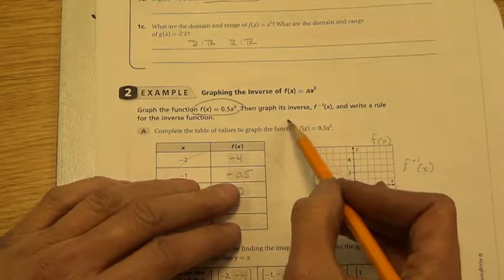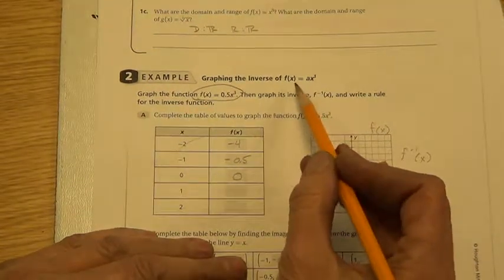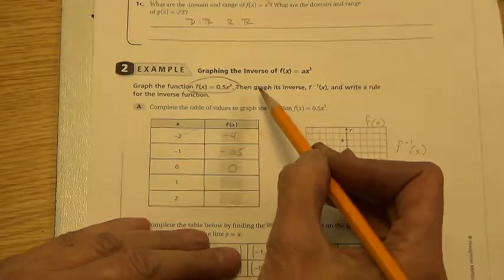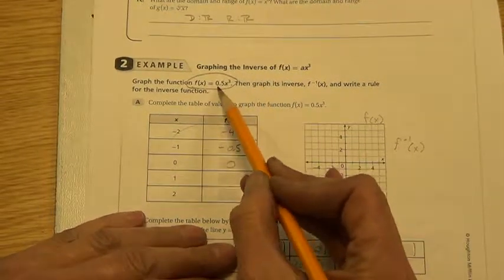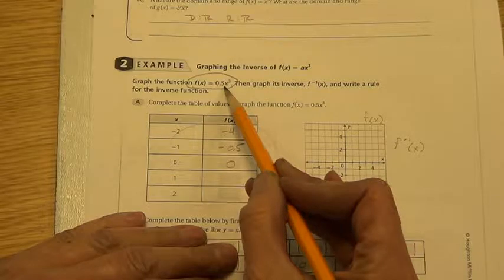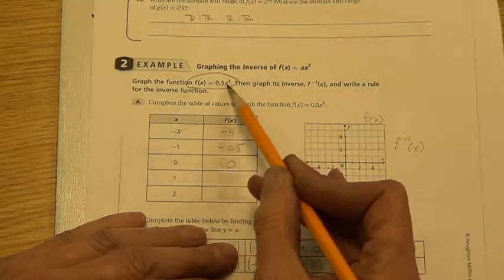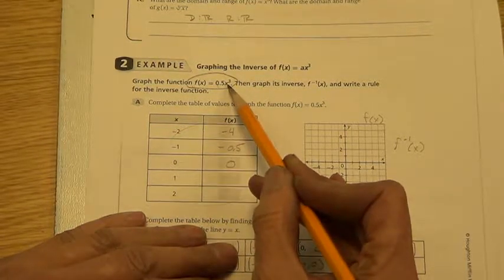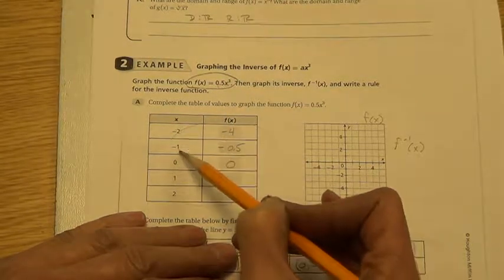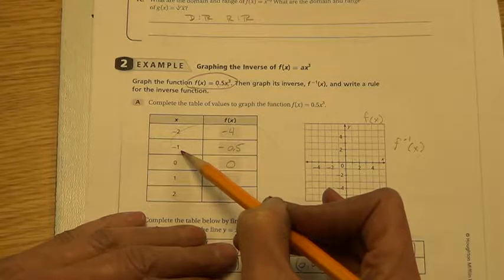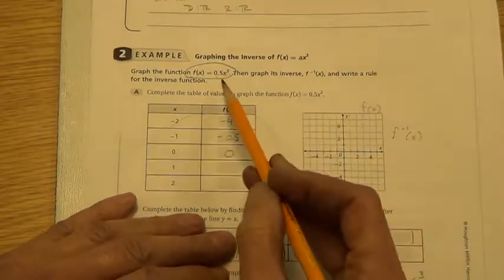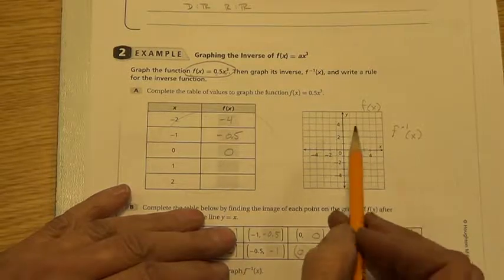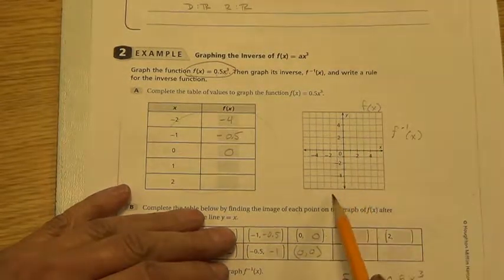Now on this, we're graphing the inverse function of 0.5x cubed. So we do it like we did with the graphing of inverse functions in the past. We graph the regular function first. So we would plug in negative 2 to the cube function. Negative 2 times negative 2 is positive 4, times negative 2 is negative 8, half of negative 8 is negative 4. Negative 1 times negative 1 is 1, times negative 1 is negative 1, half of negative 1 is 0.5. 0 times 0 times 0 is 0, times 0.5 is 0. So go ahead and fill in the last 2 there, and then you would graph this.